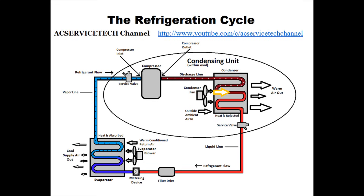It comes from the saturated state in the middle of the condenser coil and continues to reject heat as a complete liquid until it comes out of the condenser coil. Then it comes down in the picture, makes a left, and goes through the filter dryer. The filter dryer is there to absorb any moisture in the system — it has a fixed capacity and that's it.